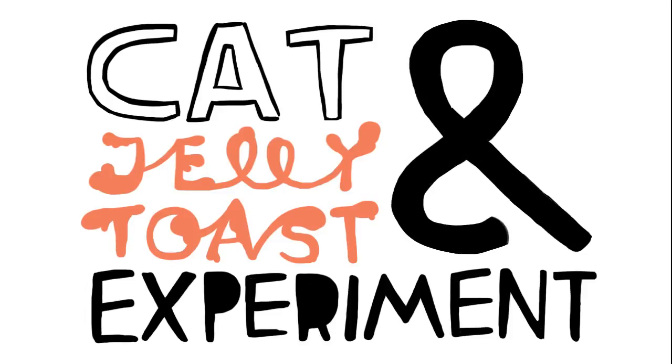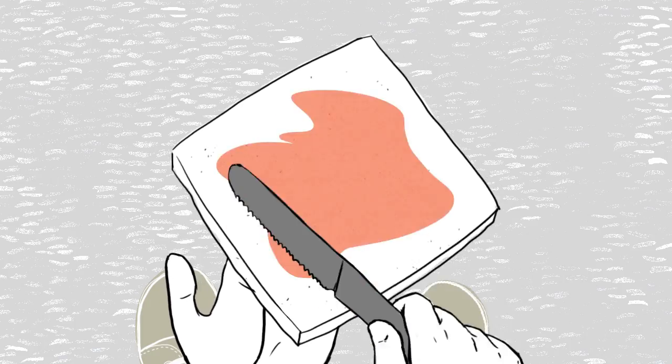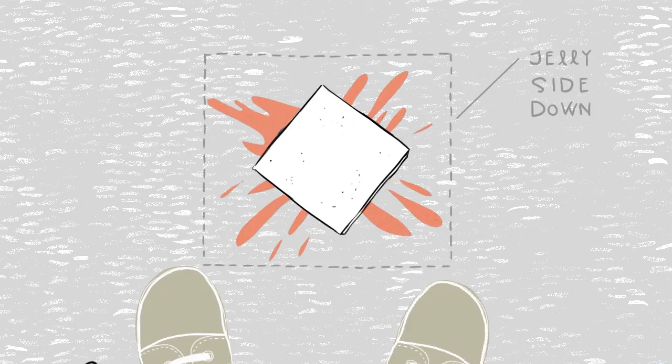Do you know the famous cat jelly toast experiment? No, what's that? So a cat always lands on its feet. Right. A slice of jelly toast always lands jelly side down.